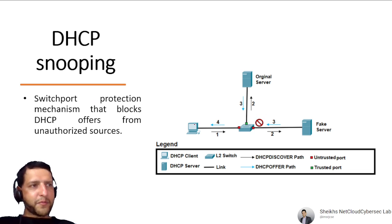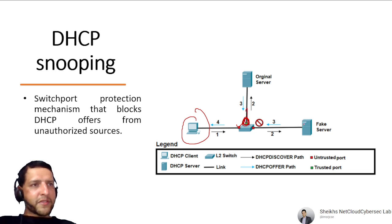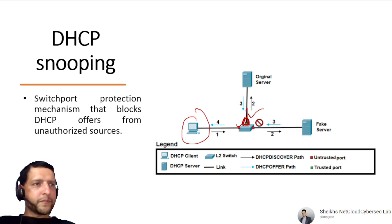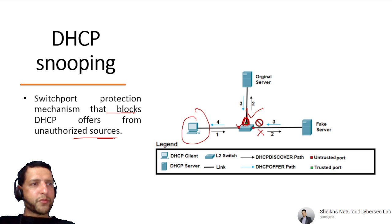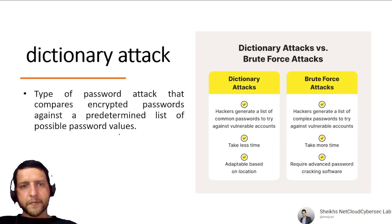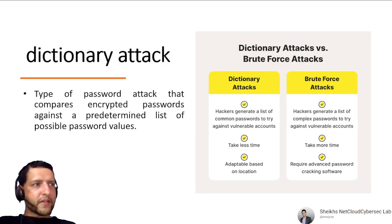DHCP Snooping is a switch port protection mechanism that blocks DHCP offers from unauthorized sources. The switch knows which port has the legitimate DHCP server (trusted port). If another device claims to be a DHCP server on an untrusted port, the switch rejects it, preventing rogue DHCP server attacks.